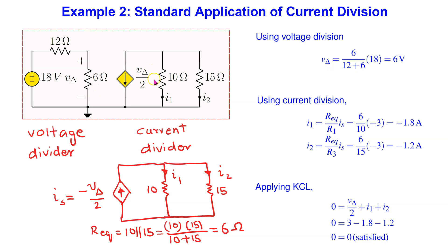We can now use voltage division to find V delta, which helps us to determine the dependent current source magnitude. Then we use current division to find I1 and I2 as shown.